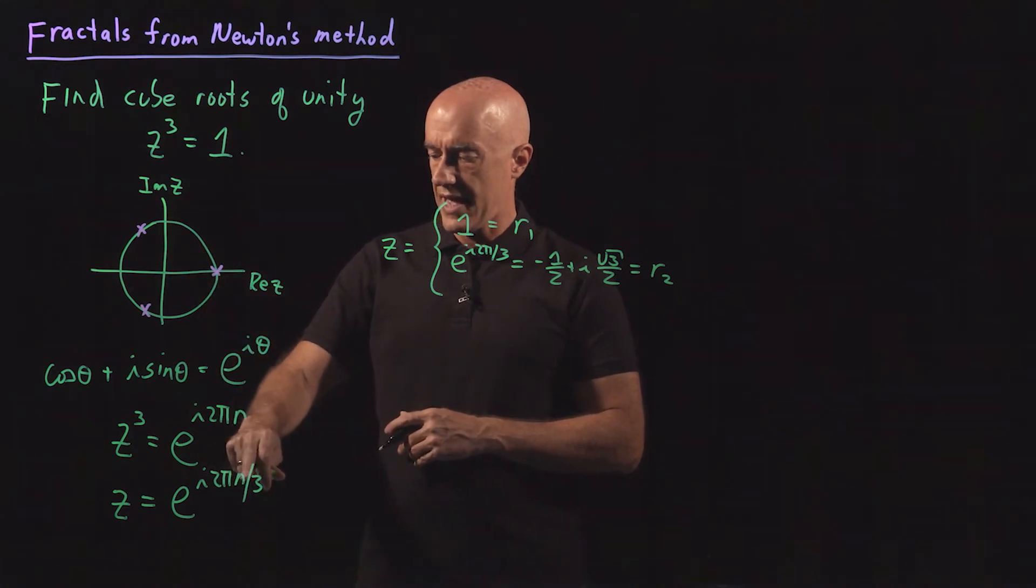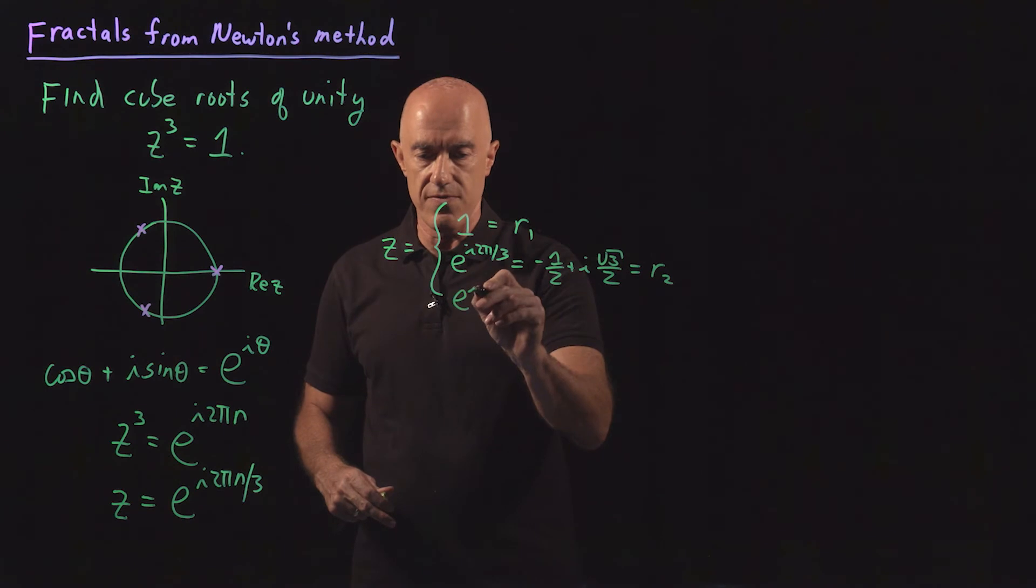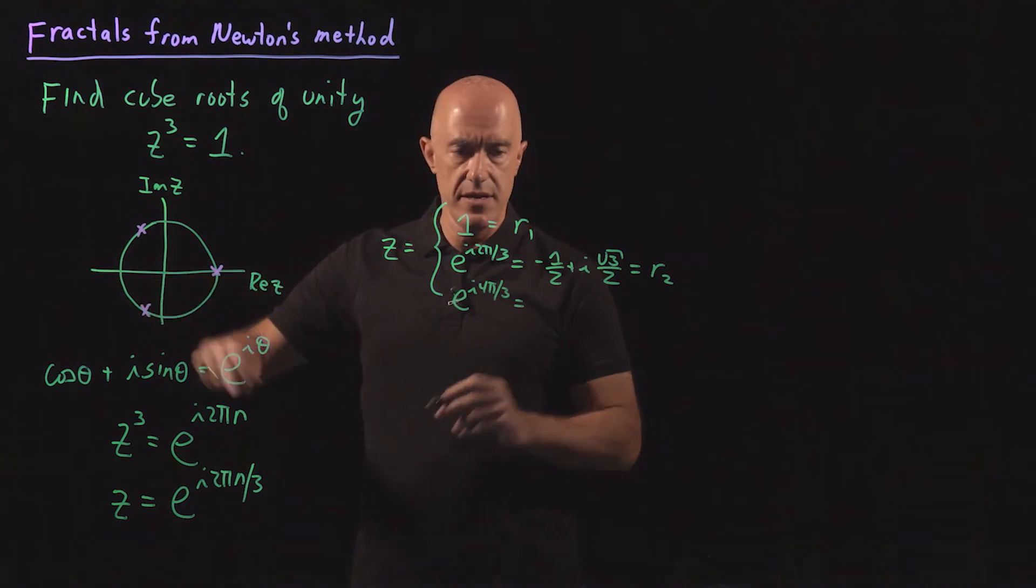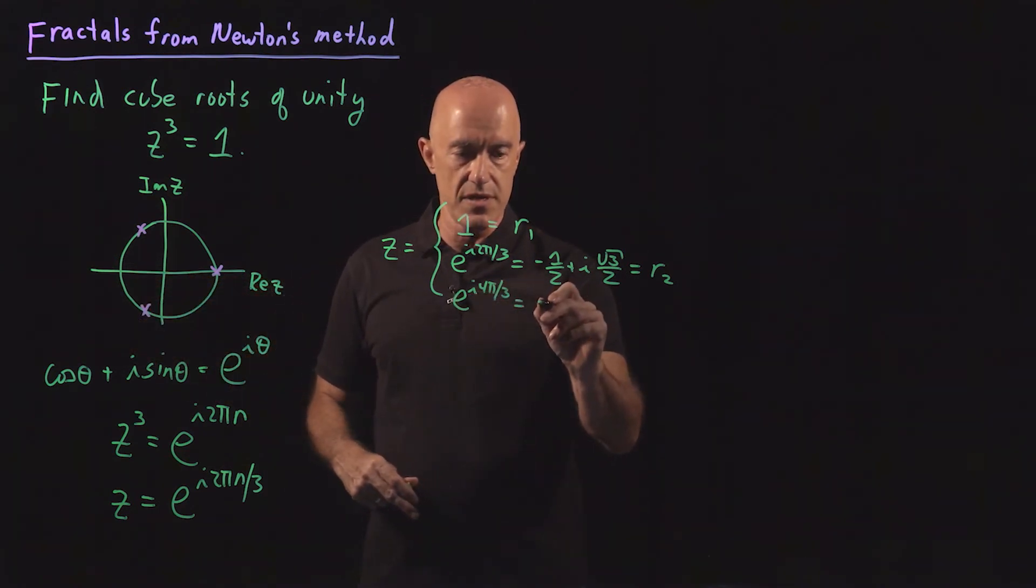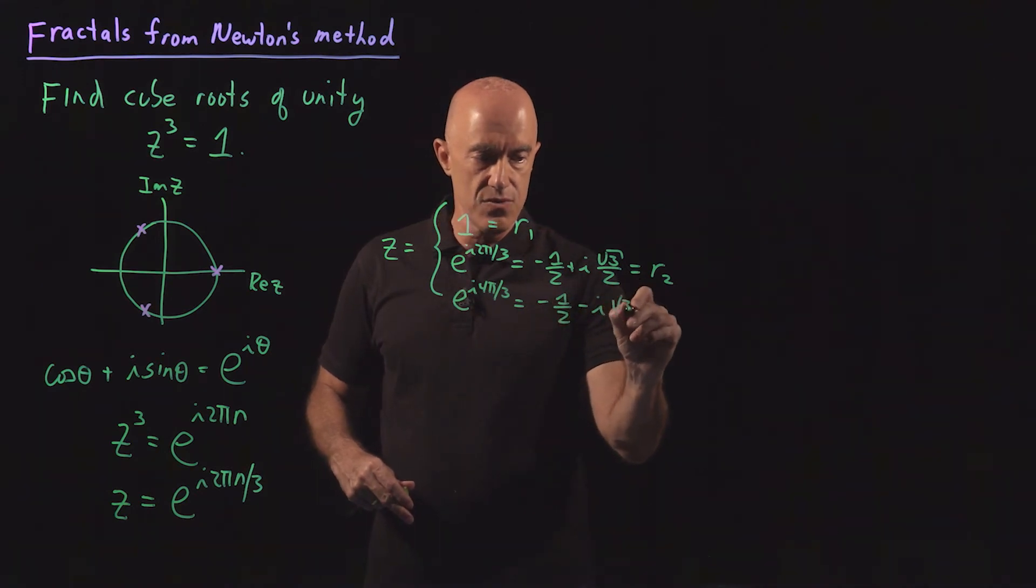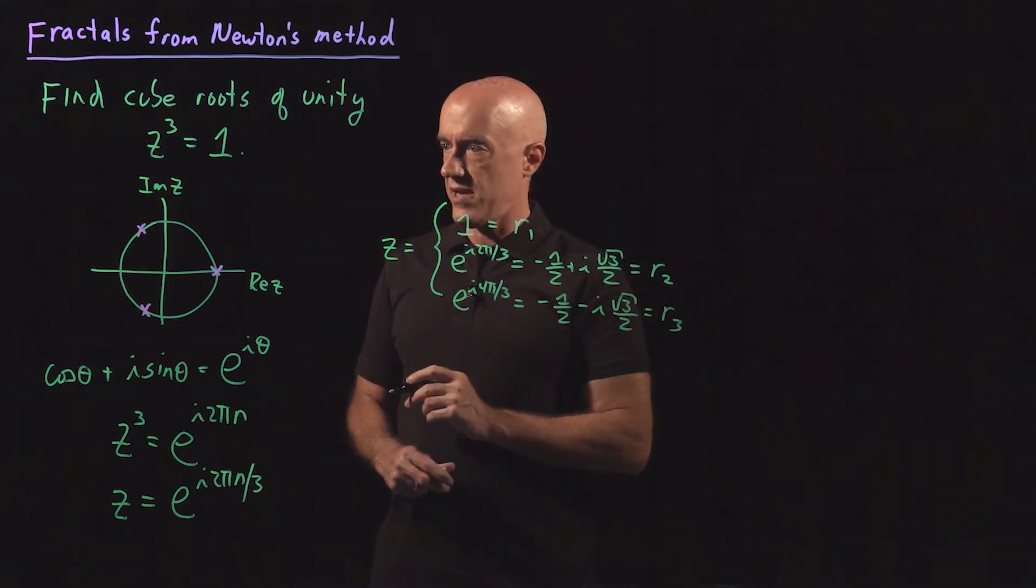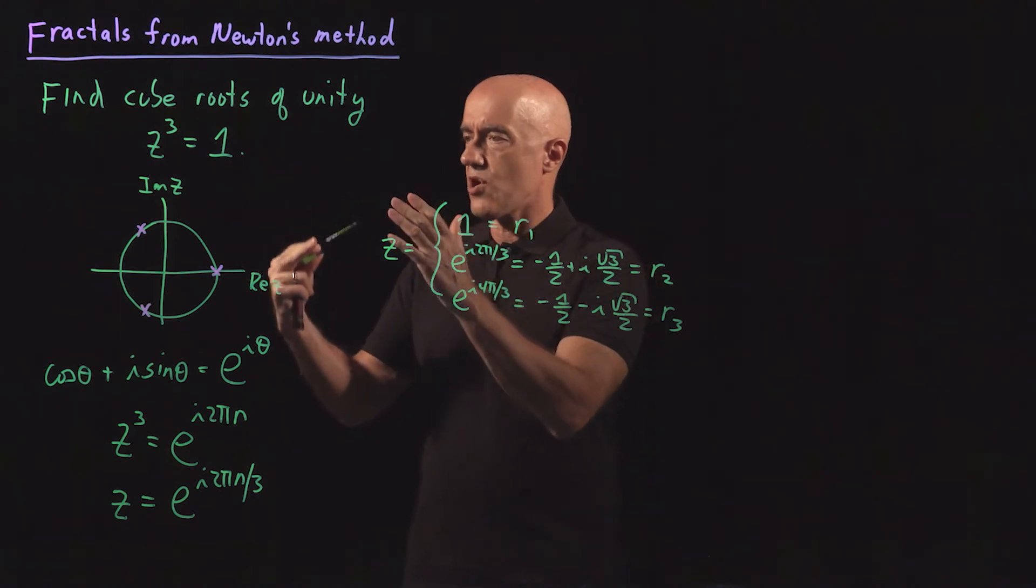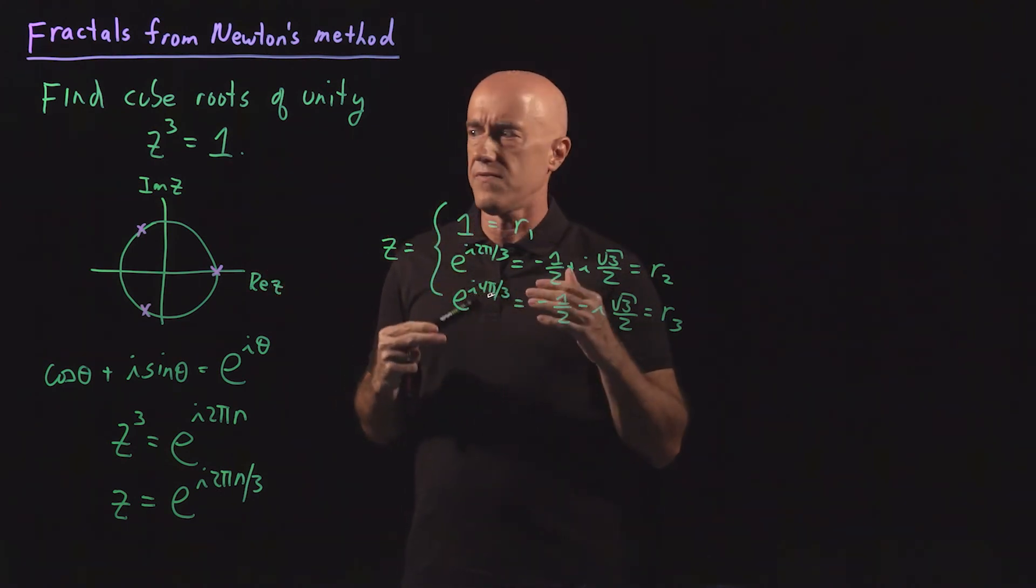The third one is n equals 2, so e to the i 4 pi over 3, and that's this lower x here. Plugging into Euler's formula, that would be minus 1 half minus i root 3 over 2, and that would be r3. So we know what our three cube roots of unity are.